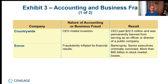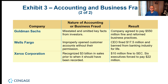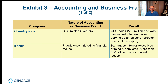There are several well-known fraud cases in the United States. Countrywide, a mortgage company, had a CEO who misled investors — the CEO paid $22.5 million and was permanently banned from serving as an officer or director of a public company. Enron, an energy company, fraudulently inflated their financial results to mislead investors. The consequences: the company went bankrupt, senior executives were criminally convicted, and there were more than $60 billion in stock market losses.